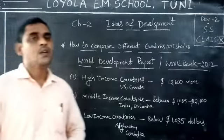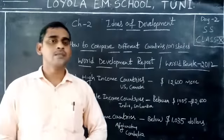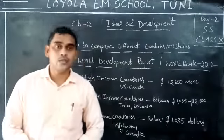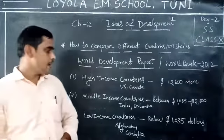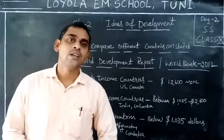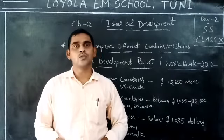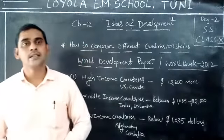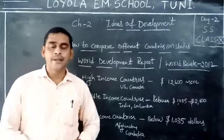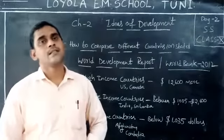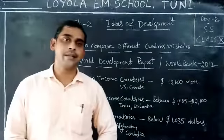The second category is middle-income countries. Countries whose per capita income is between 1,035 dollars and 12,600 dollars are called middle-income countries. Examples include India, Sri Lanka, Pakistan, Bangladesh, and Myanmar.